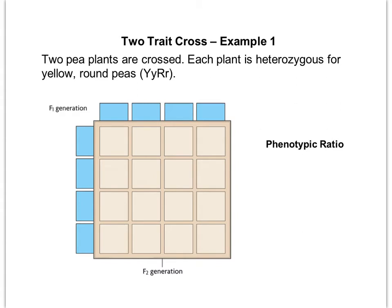The hardest part about doing these dihybrid crosses, and the part students most often mess up, is setting up the possible gametes of the parents. Since both parents are completely heterozygous, they'll be the same. It helps if you've taken algebra and know what FOIL stands for — firsts, outers, inners, lasts — as a good way to make sure you don't leave any combinations out.